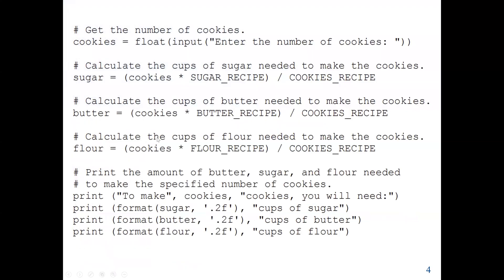Next, we get our input based on the user's options — specifically, how many cookies the user wants to produce. So our first input will get the number of cookies. We use the input function, asking the user to enter the number of cookies. When we get the input, as mentioned, the input function always returns a string data type. We convert it to float because we are going to use arithmetic operations, and store the number of cookies in the cookies variable.